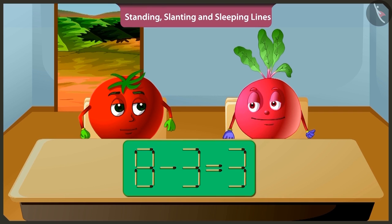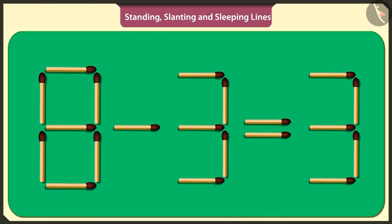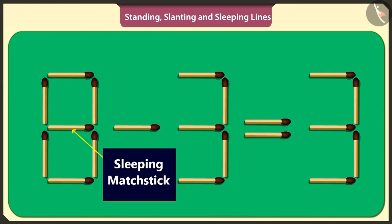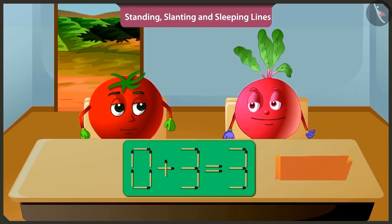Okay, hmm, if I lift this sleeping stick in the middle of number eight and place it above the symbol of subtraction like this, then the puzzle will be solved. Yes, adding three to zero will make three only. Well done.